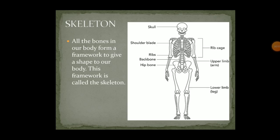Have you ever built a volcano for a science project? If yes, you might have used a bottle or a wired structure for support first, and then attached tissues or plaster of Paris for the rest of the volcano. In the same way, our body needs support and shape, and for that particular shape and support there is a skeleton present in our body. All the bones in our body form a framework to give shape to our body, and this framework is called the skeleton.